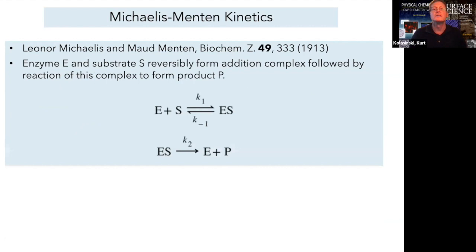The first step is this reversible formation of a complex with forward rate constant k1, reverse rate constant k-1, followed by a second irreversible step with a rate constant k2 that forms the products.